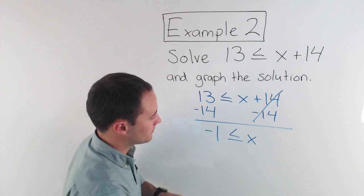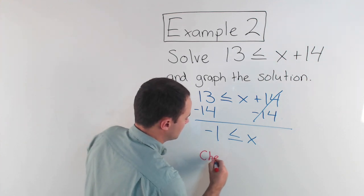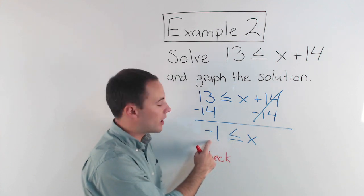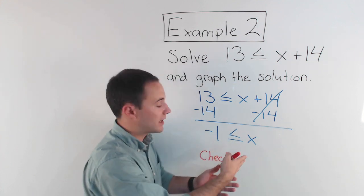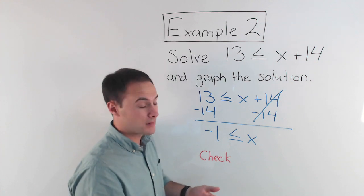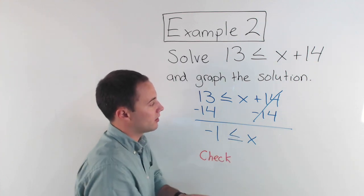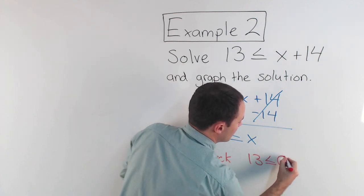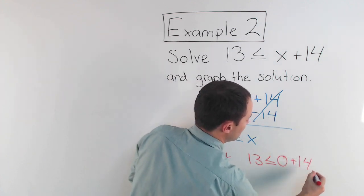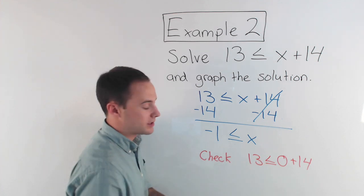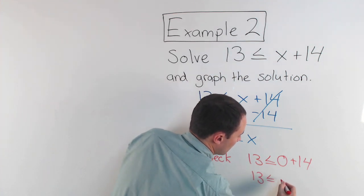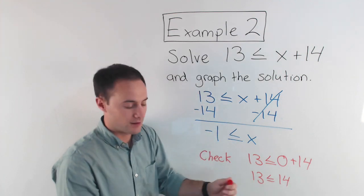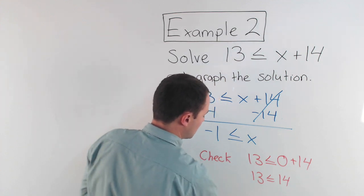Now to check, all I have to do again is if I'm saying x is going to be greater than or equal to negative 1, just pick a number in that solution. Let's say, well, 0 is greater than or equal to negative 1. So let's check 0. So my question is, is 0 plus 14 going to be greater than or equal to 13? Or again, is 13 less than or equal to 14? Yes, of course it is. So that works for my solution.